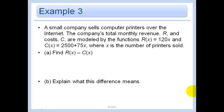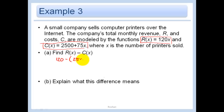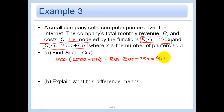A small company sells computer printers over the internet. The company's total monthly revenue r and cost c are modeled by r of x equals 120x and c of x equals 2,500 plus 75x, where x is the number of printers sold. Find r of x minus c of x — revenue minus cost gives profit. So: 120x minus (2,500 plus 75x), distributing the negative gives 120x minus 2,500 minus 75x, which equals 45x minus 2,500.